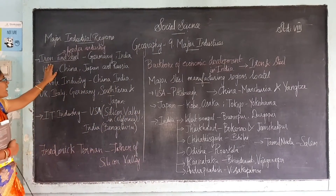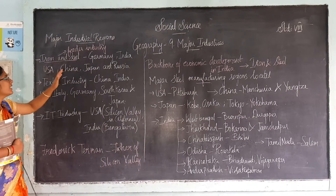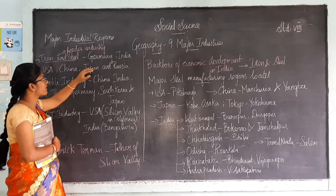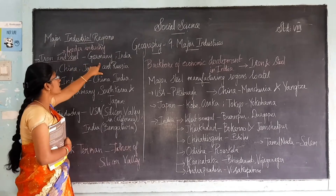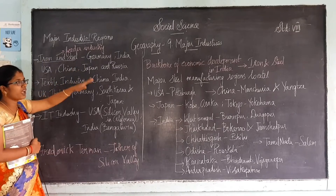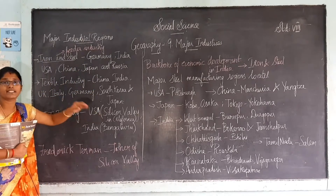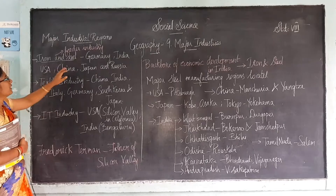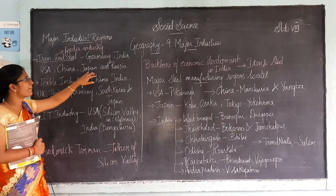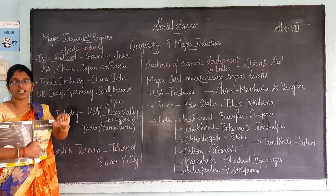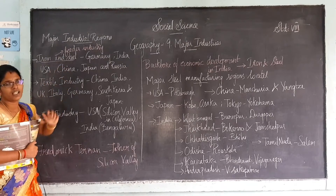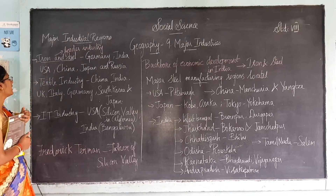Iron and steel industry is very famous in these countries: Germany, India, USA, China, Japan, and Russia. These were the famous iron and steel producing countries of the world.